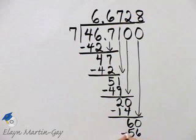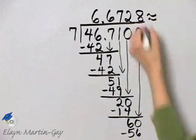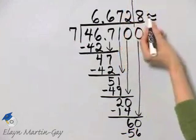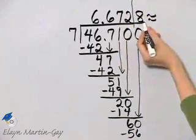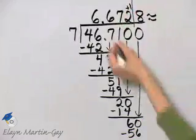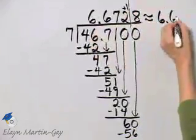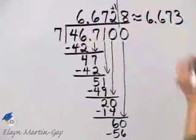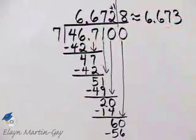So it will be 8 times 7, which is 56. But I don't actually need to do this, because now I'm ready to round to the nearest thousandth. I look at this digit. It's 5 or greater, which means I add 1 to that digit, so it's 6 decimal point, 6, 7, 3. That is my quotient rounded to the nearest thousandth.